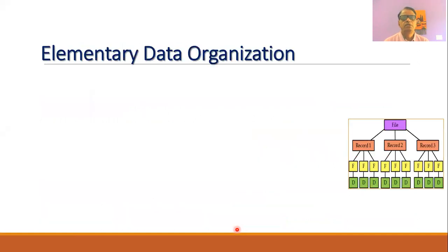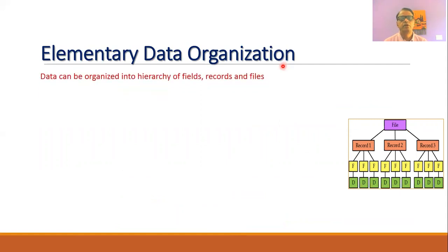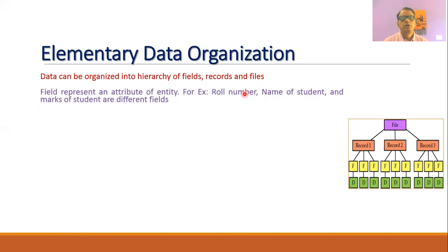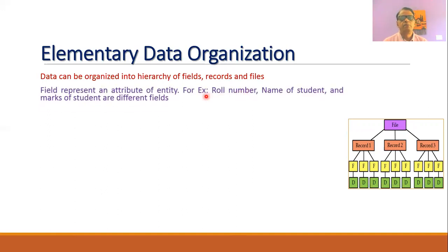Now let us look at elementary data organization. Data can be organized into a hierarchy of fields, records, and files. A field represents an attribute of an entity — for example, a roll number can be one field, the name of the student another field, and the marks scored in different subjects yet another field.